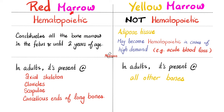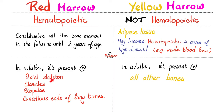Red marrow versus yellow marrow. Red marrow is hematopoietic — hemato means blood, poesis means synthesis — so red marrow can actually make blood cells, such as red blood cells, white blood cells, and platelets. But yellow marrow is not hematopoietic in the vast majority of cases. The tiny exception is in cases of high demand, such as a very stressful situation like acute hemorrhage or blood loss. When you were a fetus, all of your marrow was red. After birth and until you reach two years of age, all of your bone marrow was still red. After that, in adults, red marrow is only present in the axial skeleton, clavicles, scapulae, and the cancellous ends of long bones. Anything else in adults is yellow marrow.